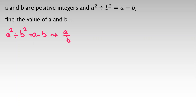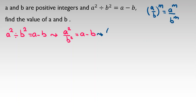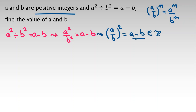From the power rule, a over b to the m equals a to the m over b to the n, so we can apply it here: a over b squared equals a minus b. The problem says a and b are positive integers, so a minus b is also an integer. Since the right-hand side is an integer, the left-hand side must also be an integer — so a over b squared is an integer.